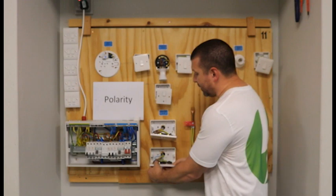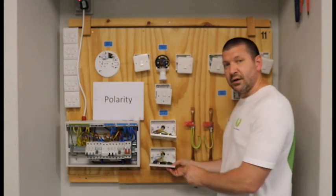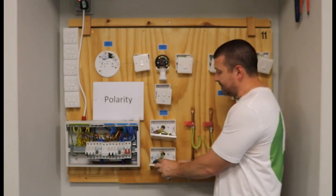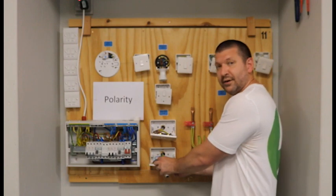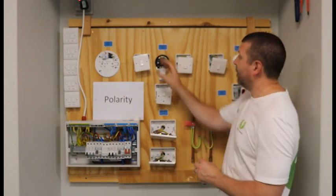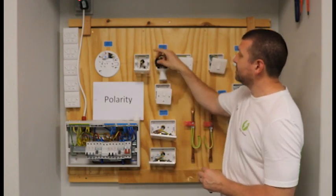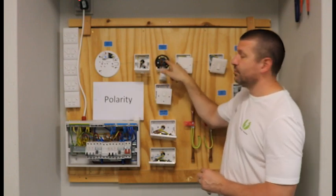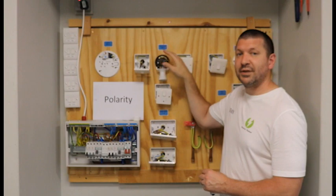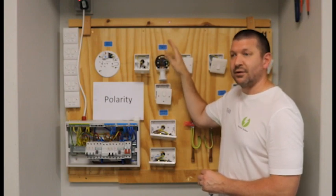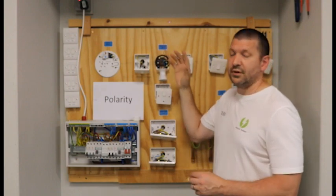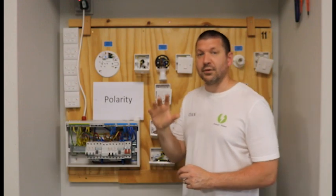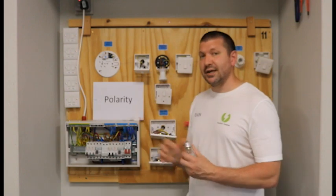So when I've gone around and done my R1 plus R2 test, I'm testing at the sockets, I'm testing between live and earth, live and neutral. And when I'm visually checking that the lives are in the lives, neutrals are in the neutrals, earth are in the earth. So if you complete your R1 plus R2 test correctly, there's no further test to do for polarity.